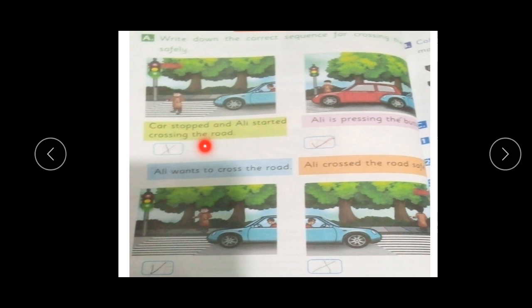Car stops and Ali starts crossing the road - false. Ali is pressing the button - true. Ali wants to cross the road - true. Ali crosses the road safely - true.